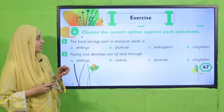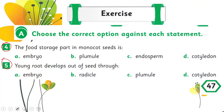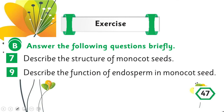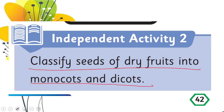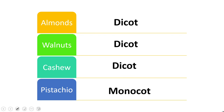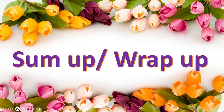For homework, go to page number 47 and do MCQ numbers 4 and 5 in your books, then do questions 7 and 9 of Exercise B on page 47. Also do the independent activity on page 42: classify seeds of dry fruits into monocot and dicot. For example, almonds, walnuts, and cashews are dicot, while pistachios are monocot.